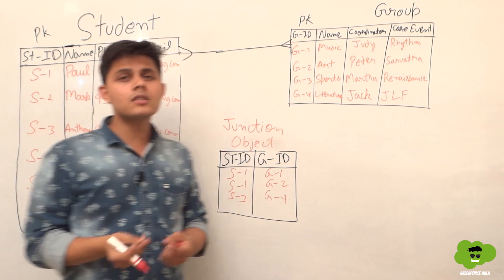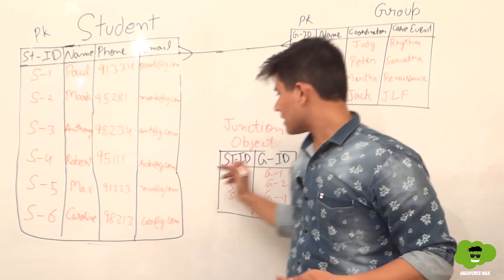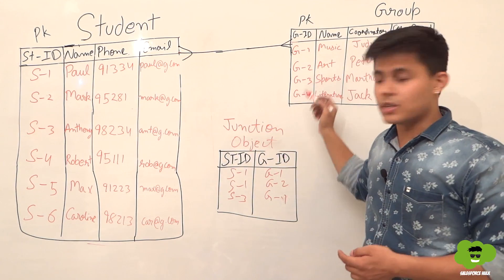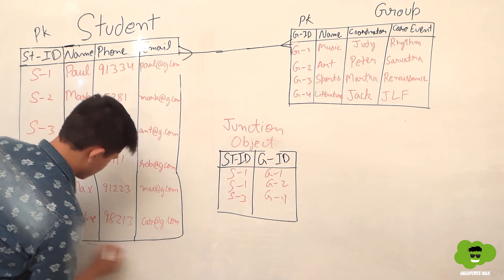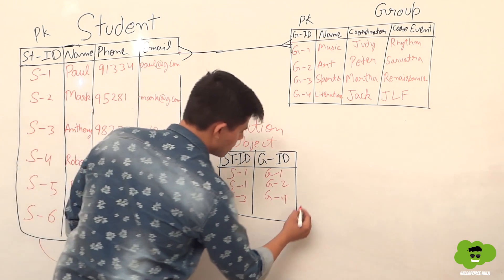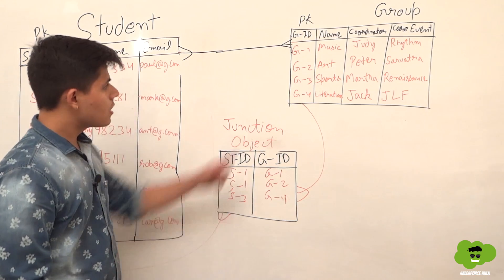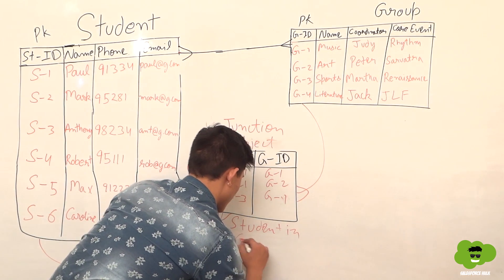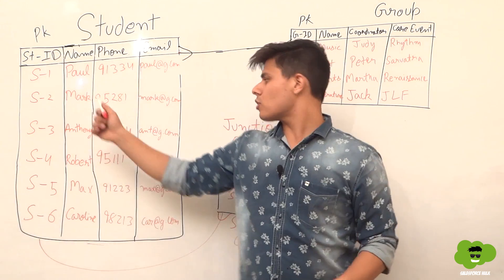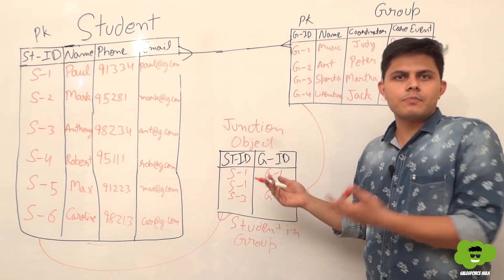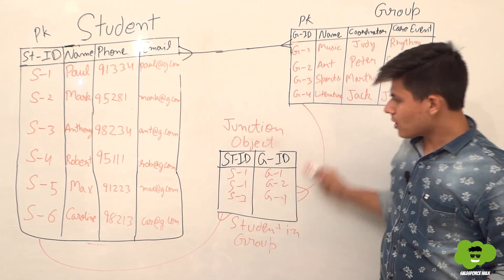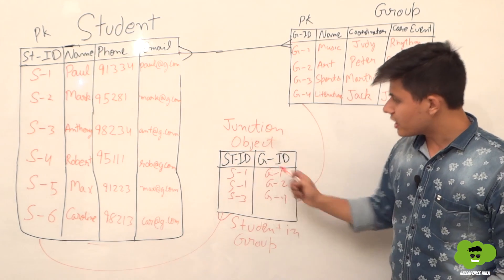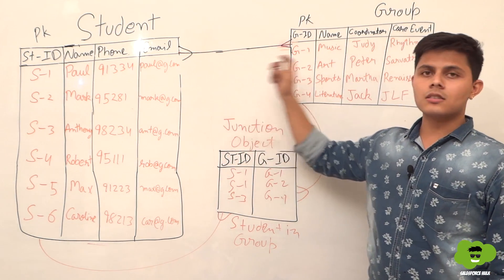The junction object is used to create a many-to-many relationship between two objects. It has two relationship fields — one with the first object and one with the second object. Group has a one-to-many relationship with the student-in-group table, and student also has a one-to-many relationship with the student-in-group table. We create the relationship field on the many-side object, so we create two relationship fields on the junction object.